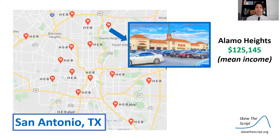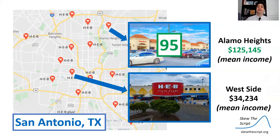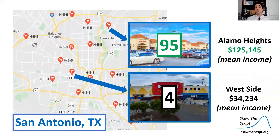Let's take a look at a couple of areas. In Alamo Heights, one of the wealthier parts of San Antonio, where the mean income is about $125,000, compared to the west side, a lower income part of town where the mean income is $34,000 — there's a large HEB in both places. The HEB in Alamo Heights offers 95 organic vegetables, while at the west side location there are only four. So Linda wanted to explore: is income a good predictor of how many organic food products would be offered in your local store?